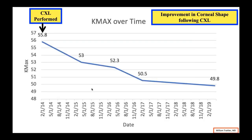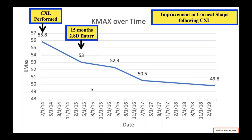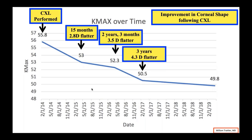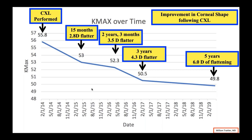If you track K-Max over time, many patients show continuous improvement. Here's a patient who started at 55.8, and at 15 months they were 2.8 diopters flatter; at 2 years 3 months, 3.5 diopters flatter; at 3 years, 4.3 diopters flatter; and at 5 years, 6 diopters flatter. It's pretty remarkable. I tell patients it's not just the first, second, and third year — even five, six, seven, eight, nine, or ten years later you can see more improvements in corneal shape. Not everyone gets improvement, but lots of patients do.